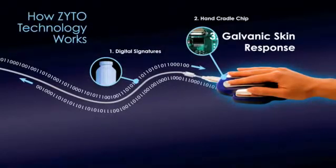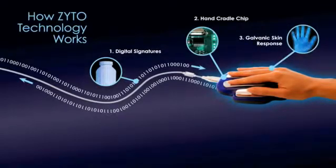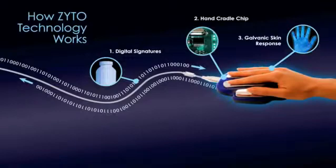Galvanic skin response, or GSR, is an established technology that measures fluctuations in electrical conductivity of the skin as the body responds to various stimuli. One application of GSR that many people are familiar with is lie detector testing.